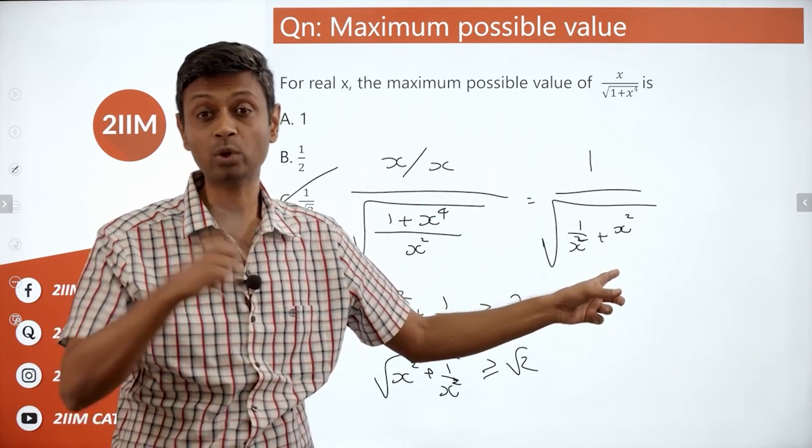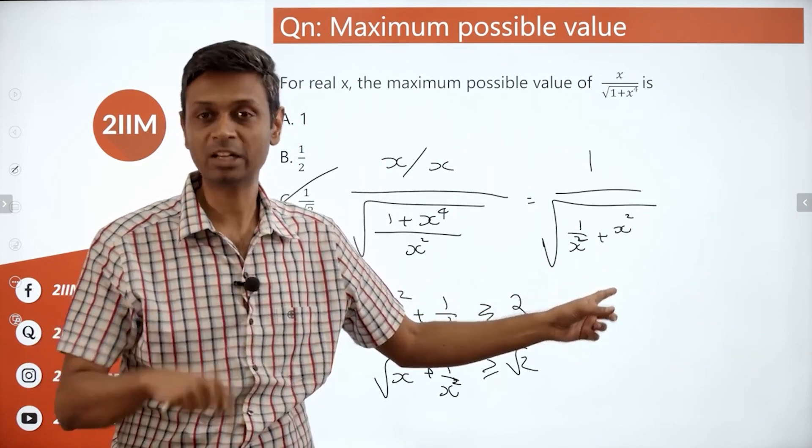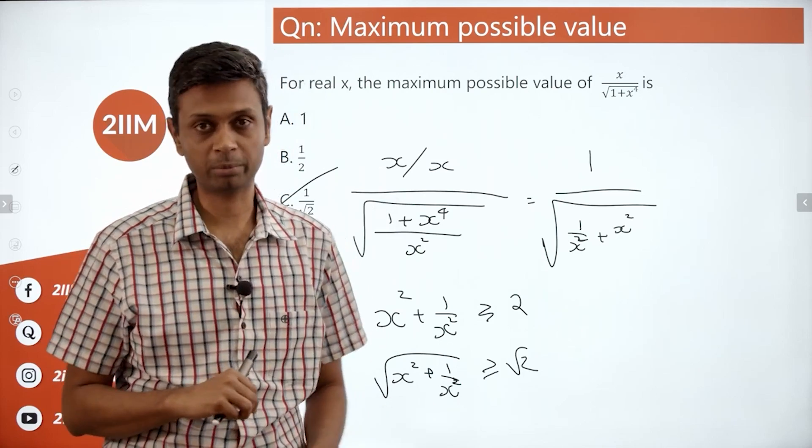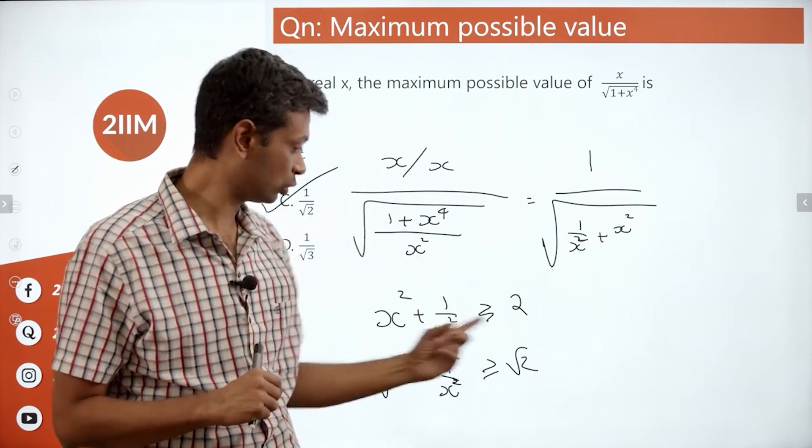Therefore, we know how square root of x square plus 1 by x square behaves. Therefore, we know how 1 by square root of x square plus 1 by x square behaves. So, this is greater than or equal to 2.